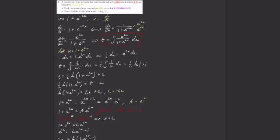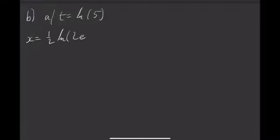So now we want to find acceleration when t is natural log of 5. So for part b, I want a given t equals natural log of 5. The information that I have is that x is equal to 1 half natural log 2e to the 2x minus 1. And I also know from the question, I know that v is equal to 1 plus e to the negative 2x. And I want a.